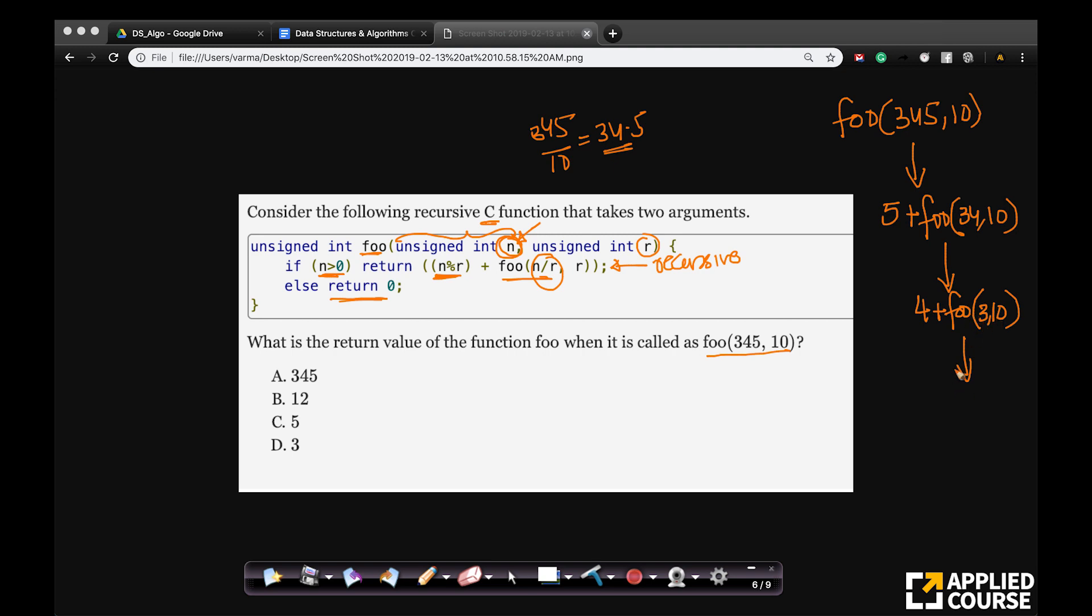So again, what is the reminder here? If you divide 3 by 10, the reminder is 3 plus foo of 3 by 10. If you round 3 by 10, you get 0, 0 comma 10. And if n equals to 0, you return 0.